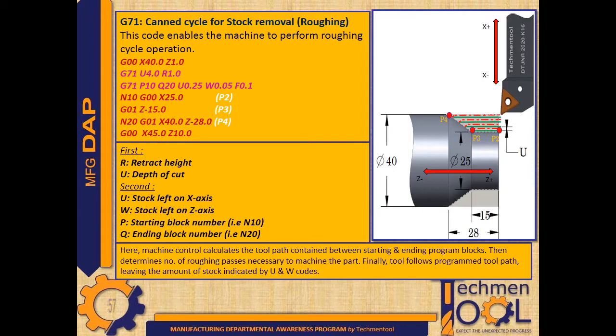Then it determines the number of roughing passes necessary to machine the part. Finally, the tool follows the programmer toolpath leaving the amount of stock indicated by U and W values.